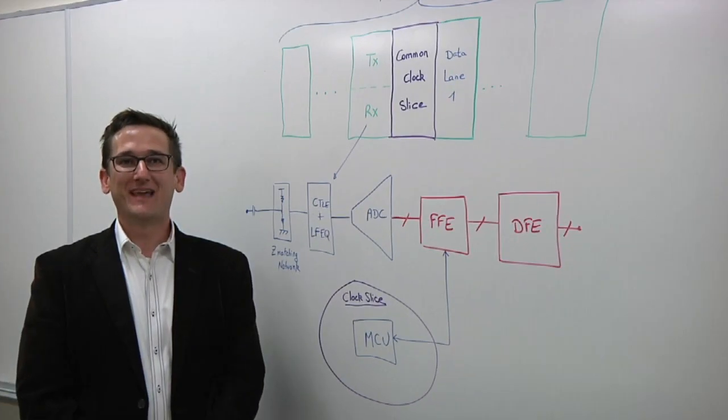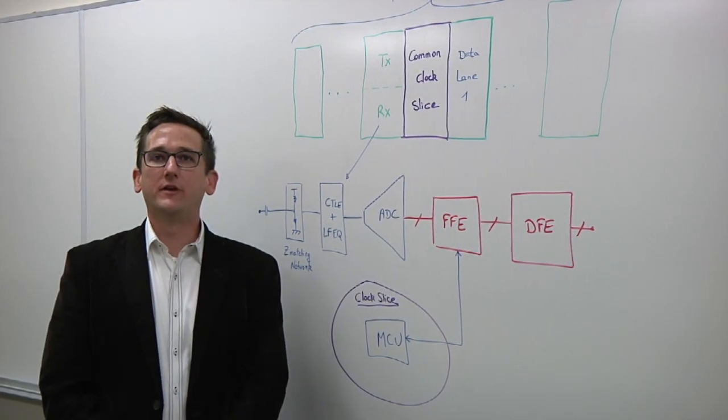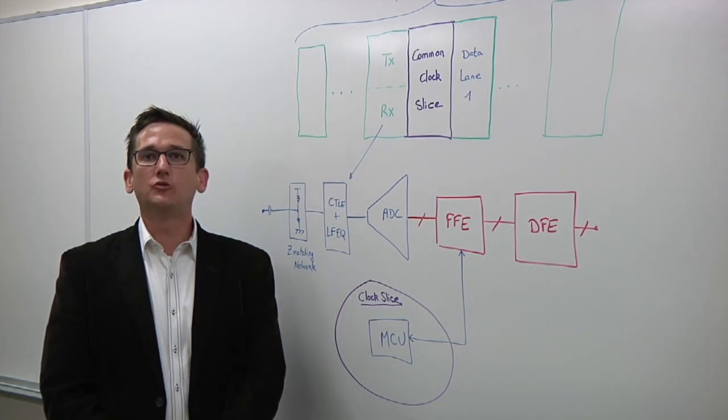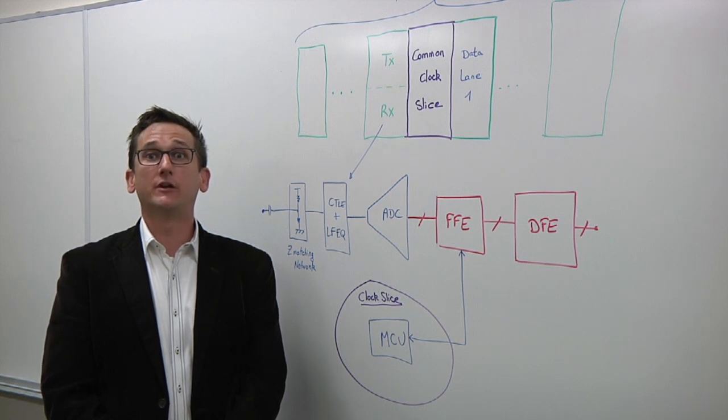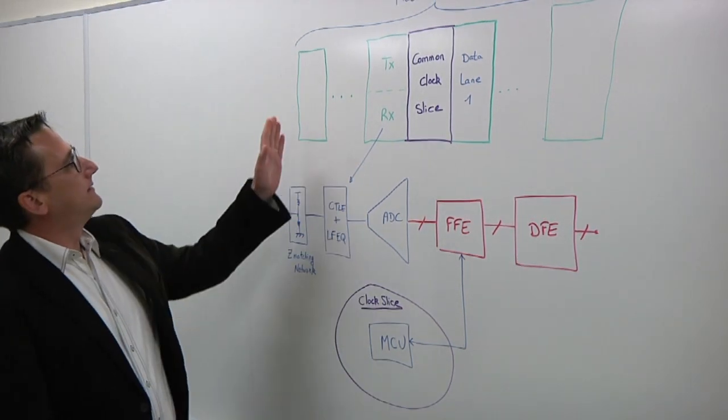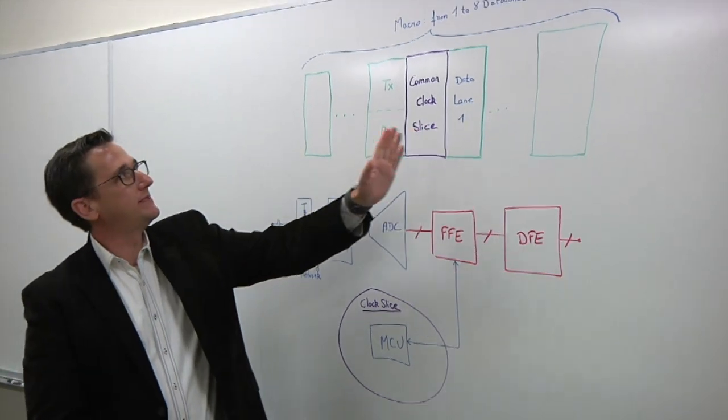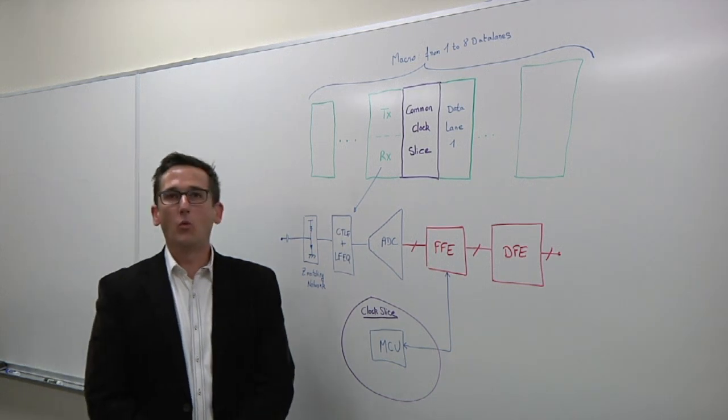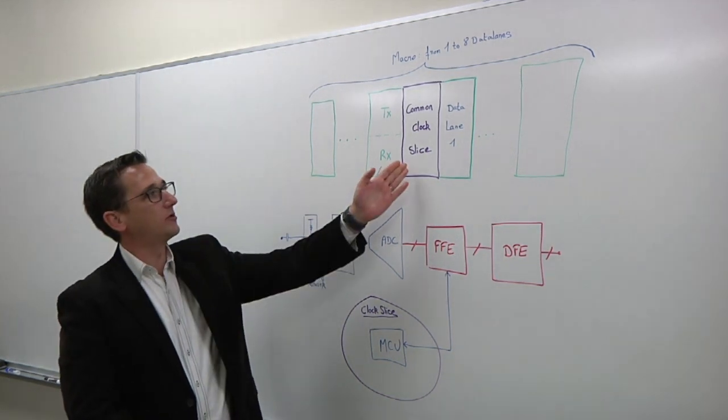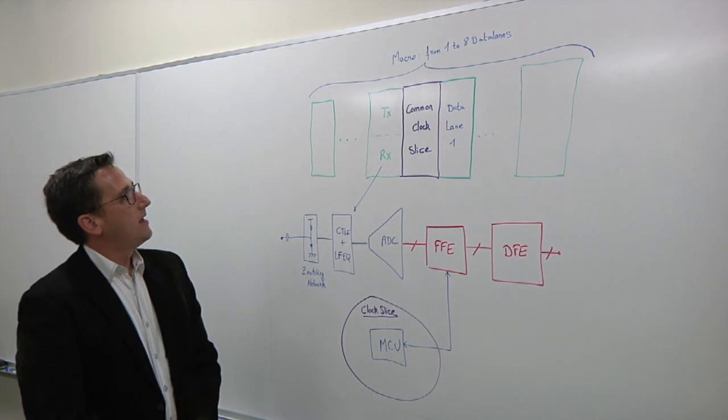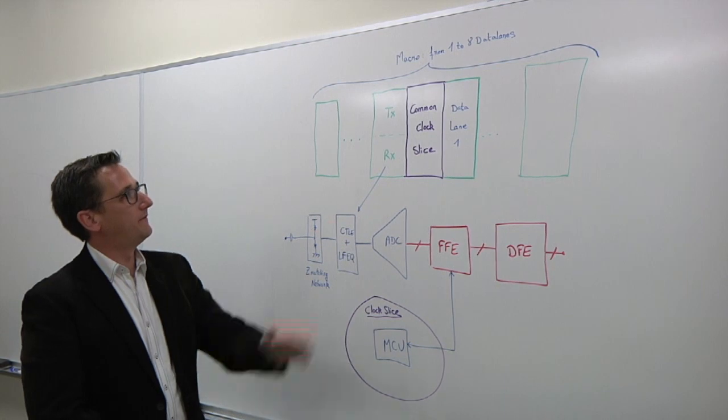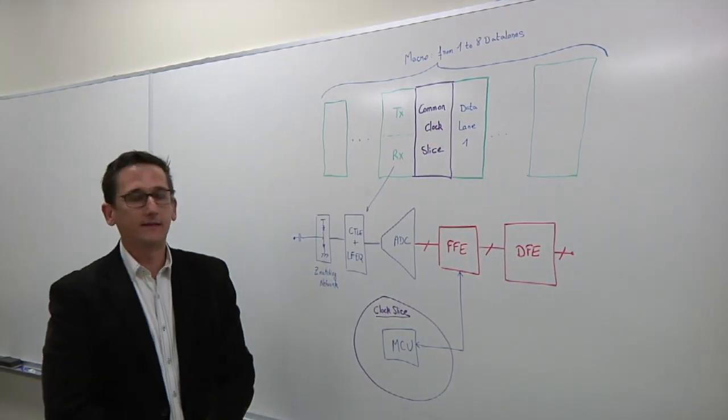Why don't you draw this out for us? Sure. What are we looking at here? So here we are looking at how we configure a SerDes macro, latest generation SerDes macro, in order to enable the future generation of networking switches. If we look at how a SerDes macro is built, you can implement macros from one to eight lanes per common clock slice. If we look a little bit closer at the architecture of the data lane, for instance, data lane number one.